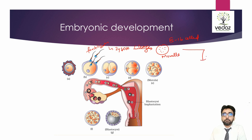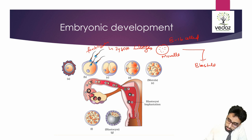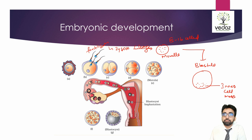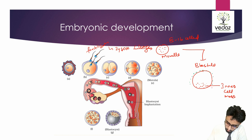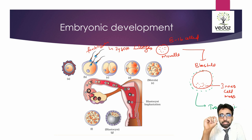After morula, we will have blastula. What is blastula? Some of the blastomeres will be arranged at one pole — these blastomeres are known as the inner cell mass. A few of the other blastomeres will arrange themselves into the outer part and they will be known as the trophoblast.